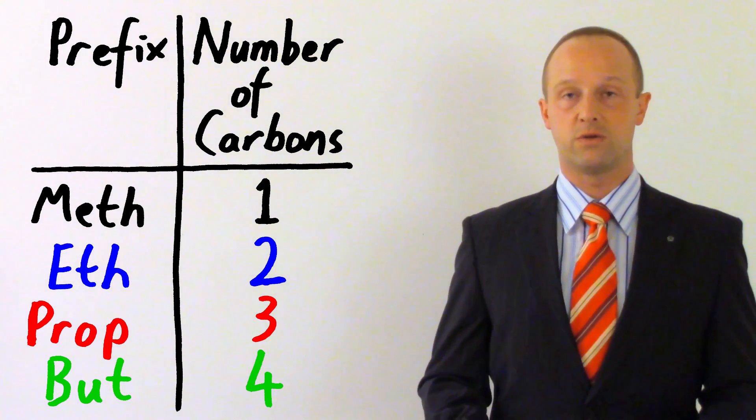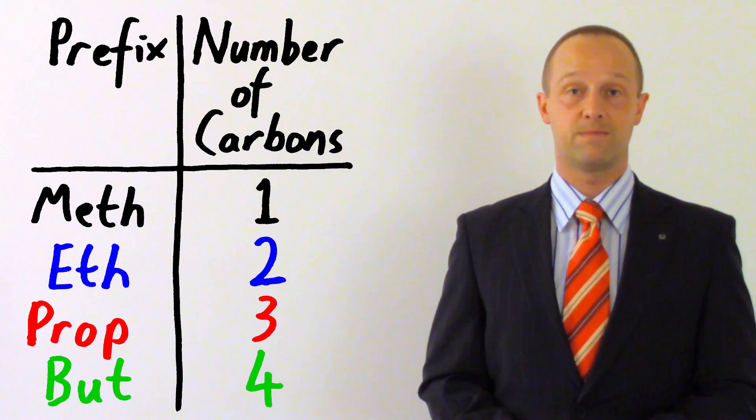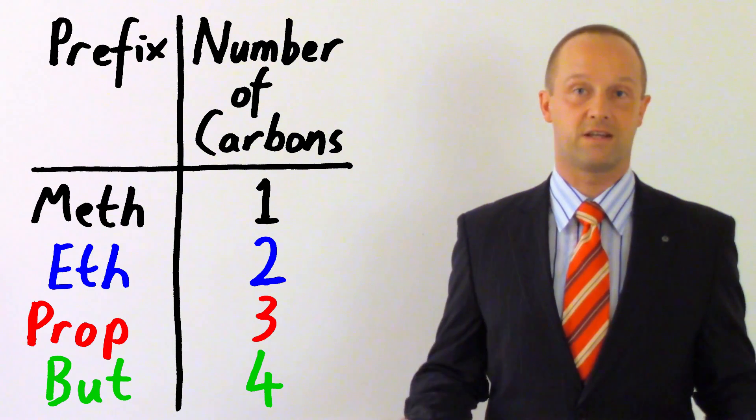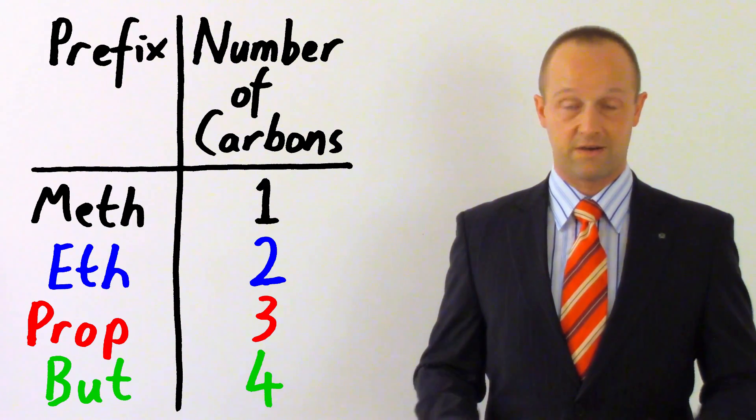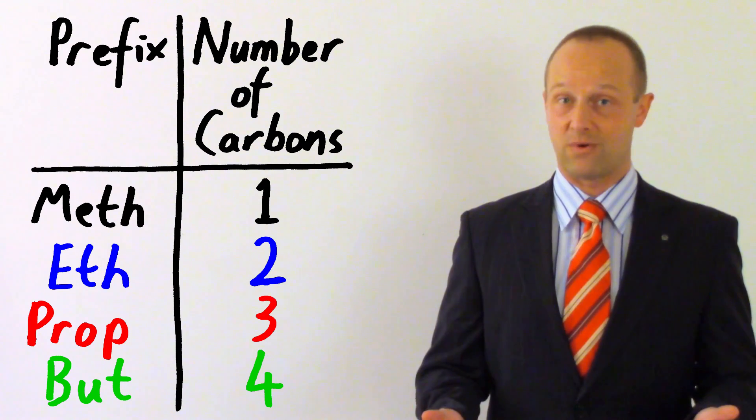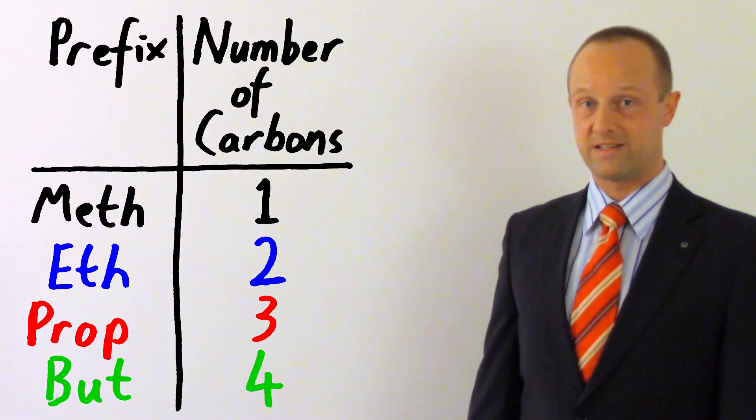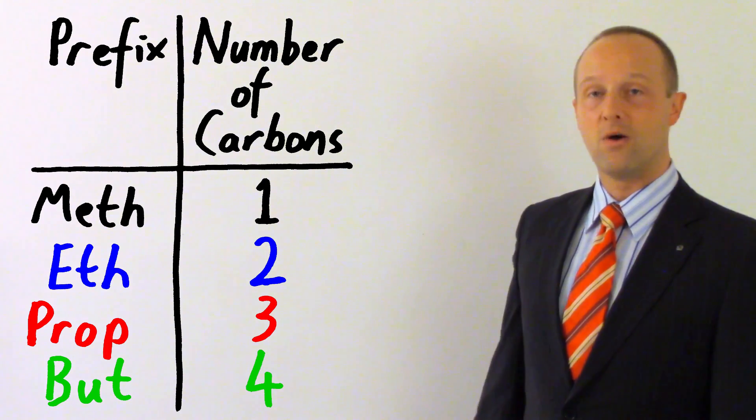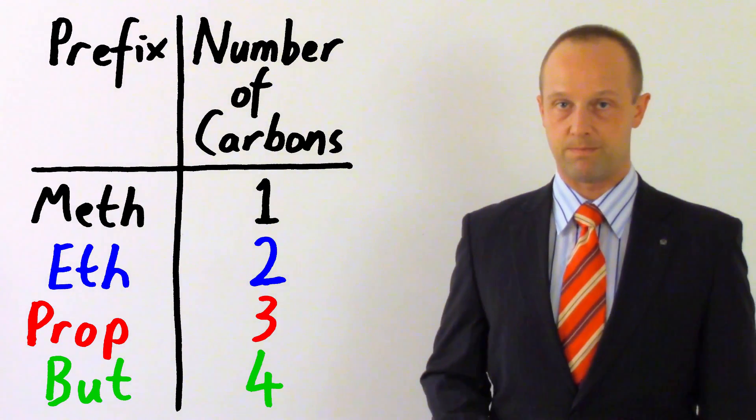After these four, it gets to prefixes which you are probably very familiar with. The next one is pentane, if you've got five carbon atoms, exactly the same as a pentagon. The prefixes are just the same as with shapes from this point out. So five is pentane, and after that, hexane, and so on. You don't need to worry about that though. It's just these ones which you really need to learn.